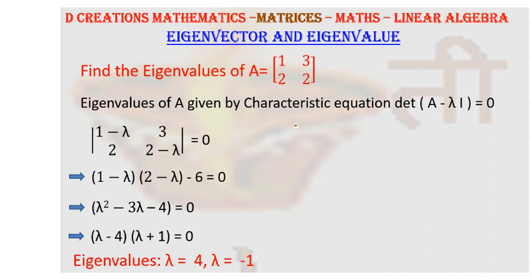So this equation has two eigenvalues, or in other words I would say that this matrix A has two eigenvalues, namely plus 4 and minus 1.